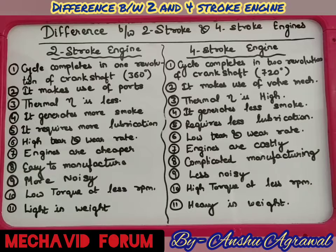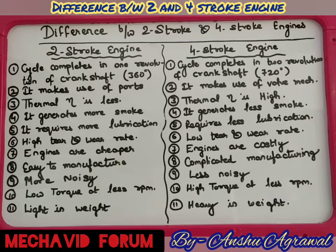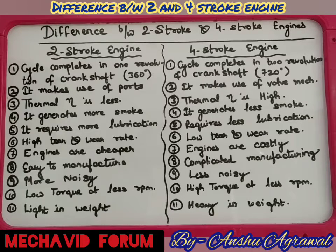If you read the two-stroke and four-stroke engine descriptions, the link is in the description box. When the crankshaft rotates in a two-stroke engine, the four processes — suction, compression, expansion, exhaust — are completed in one rotation of the crankshaft, meaning we have a power stroke in one rotation. In a four-stroke engine, those same four processes — suction, compression, expansion, exhaust — span 720 degrees, meaning the crankshaft has to rotate two times, 360 degrees each.